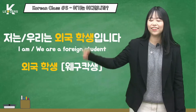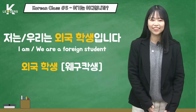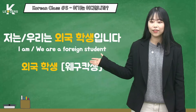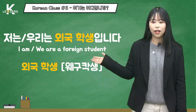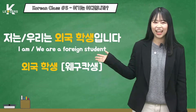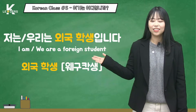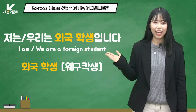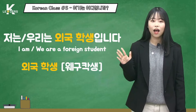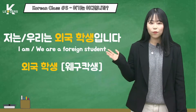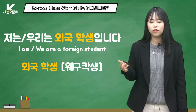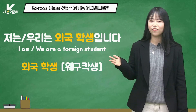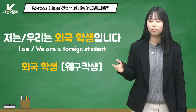The third sentence is 저는 외국 학생입니다, and 우리는 외국 학생입니다. 저 means 'I.' There are two words for 'I' in Korean: 나 and 저. 나 is the common one, but when you are younger than someone, we use 저. So when you meet someone for the first time, it is correct to use 저.